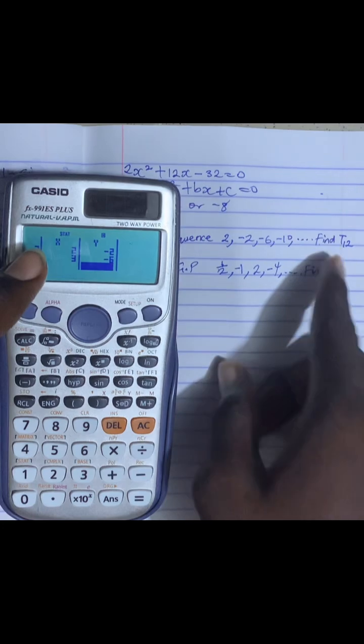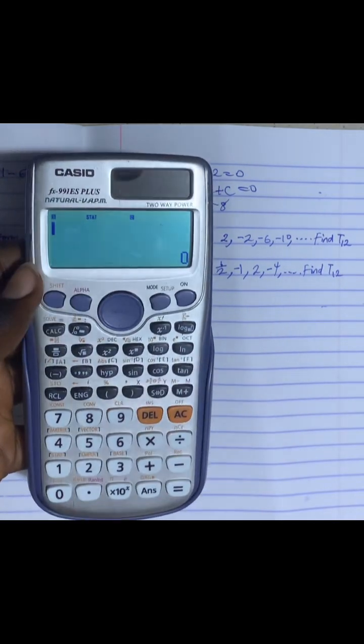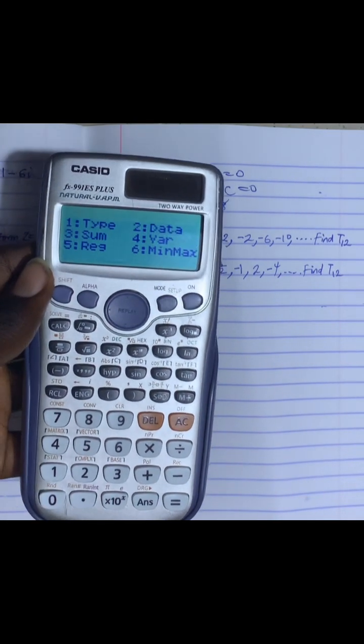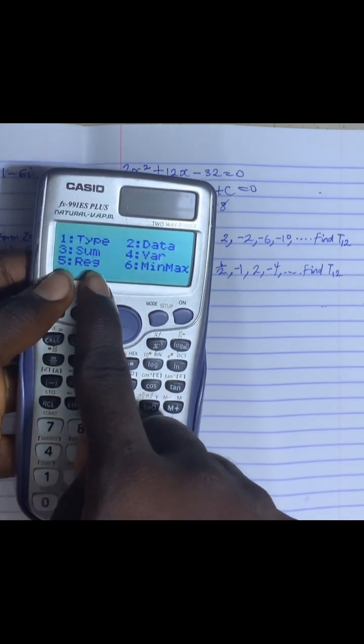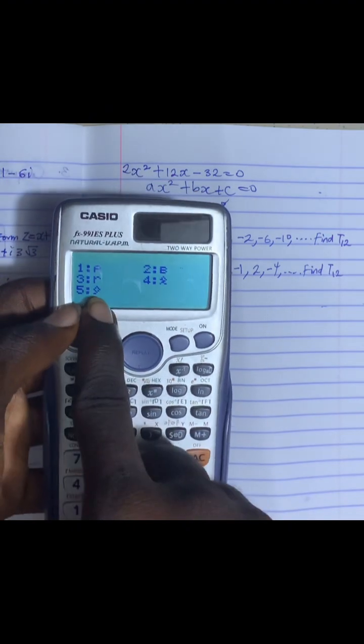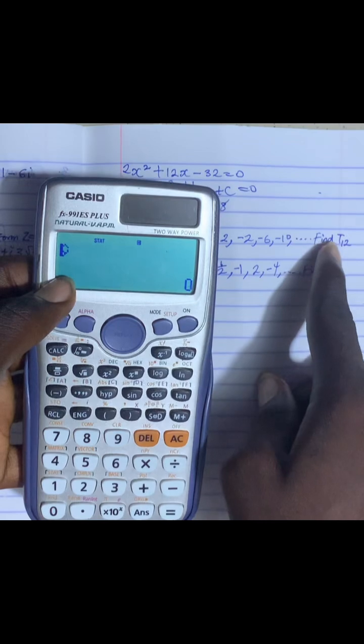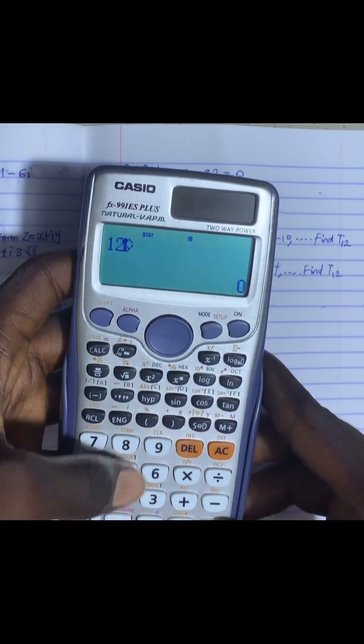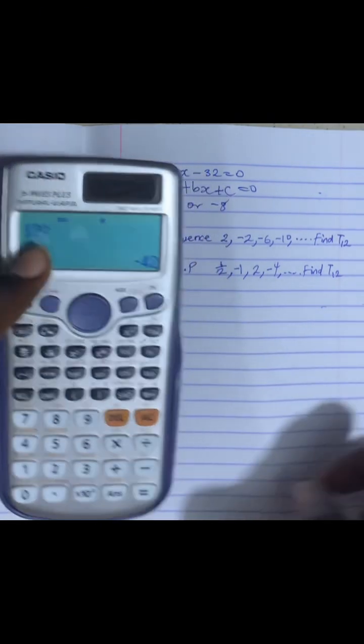Now, to find the 12th term, all I have to do is press AC on my calculator. Press shift. Number 1 is showing stats, on it stats. Then number 5 is showing REG, so I'll press 5. Number 5 is showing something like a 9 symbol. I press 5. So in front of that number I'll press 12 because I'm looking for the 12th term. I'll press 1, 2. Now my value for the 12th term is actually minus 42.